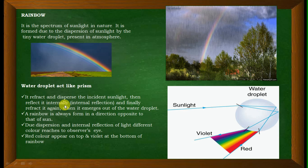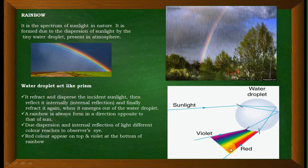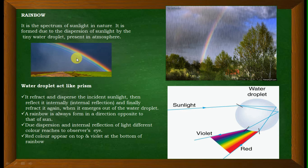This internal reflection inside the water droplet is followed by a final refraction when light emerges out of the droplet. A rainbow is always formed in the direction opposite to the sun. Due to dispersion and internal reflection, different colors reach the observer's eyes. Red color appears on top and violet appears at the bottom of the rainbow.